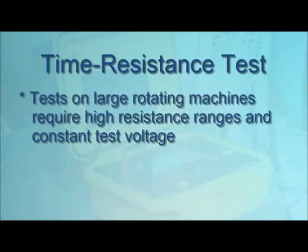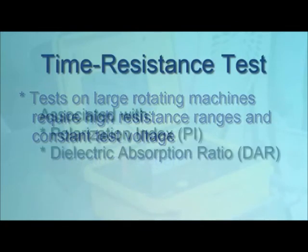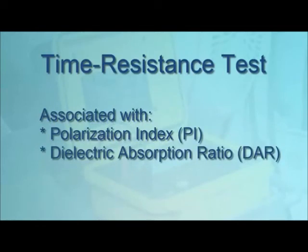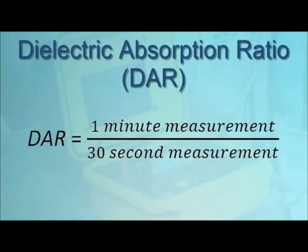Time resistance tests on large rotating electrical machinery, especially systems at high operating voltage, require high insulation resistance ranges and a very constant test voltage. Since this test provides meaningful results within a single 10-minute duration, it is relatively independent of temperature and independent of the size of the system under test. The time resistance test is sometimes associated with two values: the polarization index, or PI, and the dielectric absorption ratio, or DAR. The PI is derived by dividing the 10-minute resistance measurement by the 1-minute measurement. The DAR is calculated by dividing the 1-minute measurement by the 30-second measurement. Although DAR is no longer commonly used with new insulation systems, it may still have applicability when testing older insulating materials.